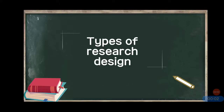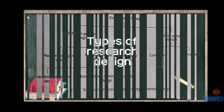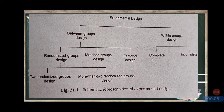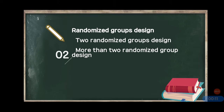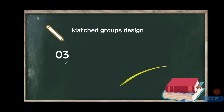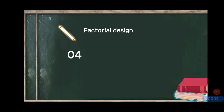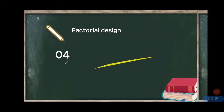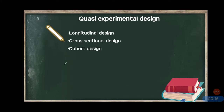Hello everyone, this video is a continuation of Types of Research Design Part 1, in which I discussed experimental designs. In this video I am going to talk about quasi-experimental design and specifically three designs: longitudinal, cross-sectional, and cohort design.